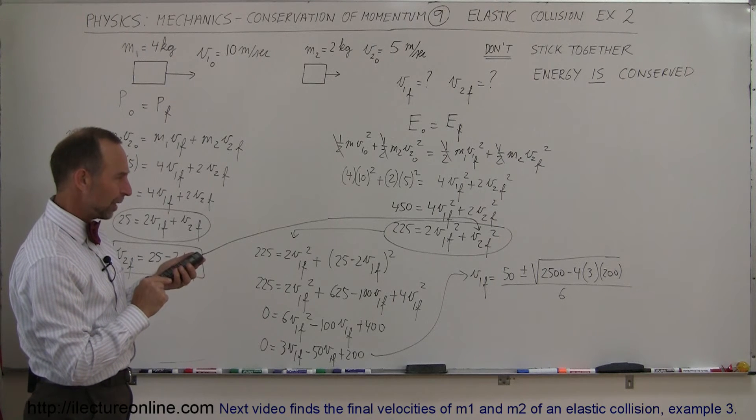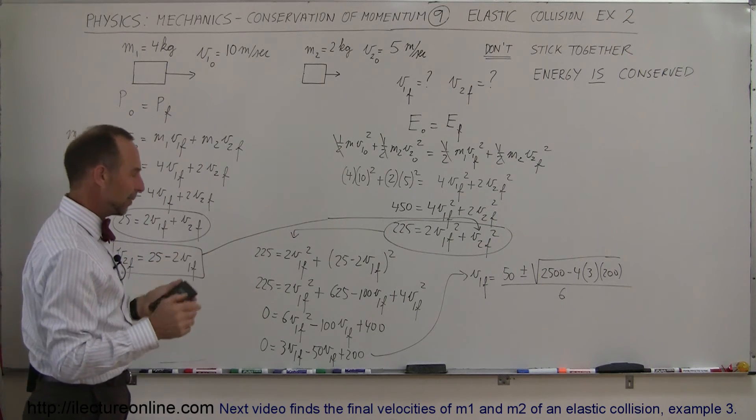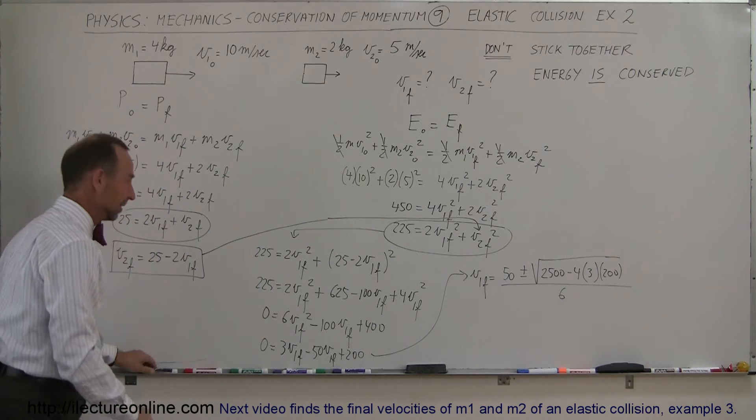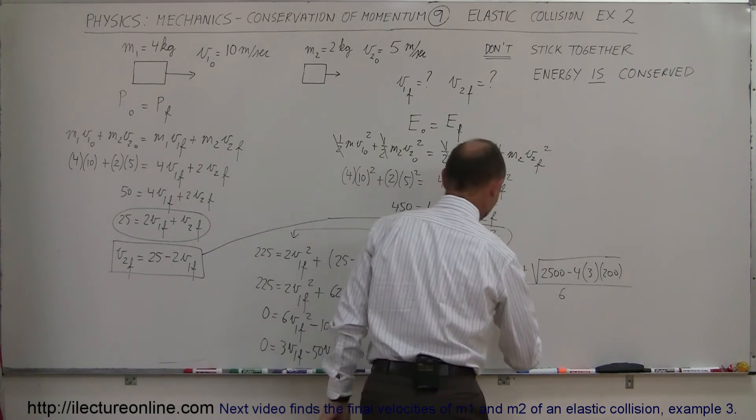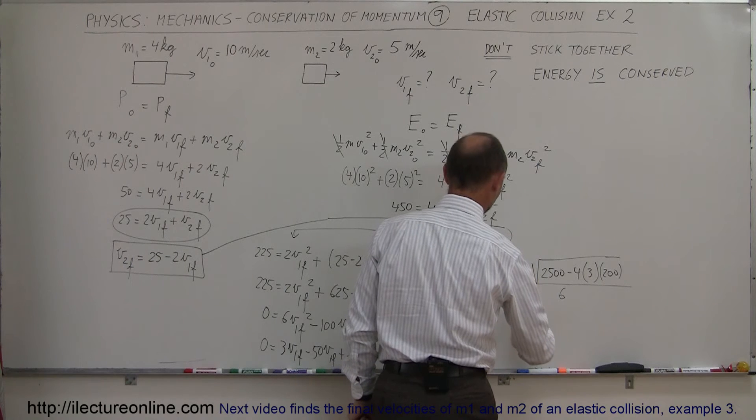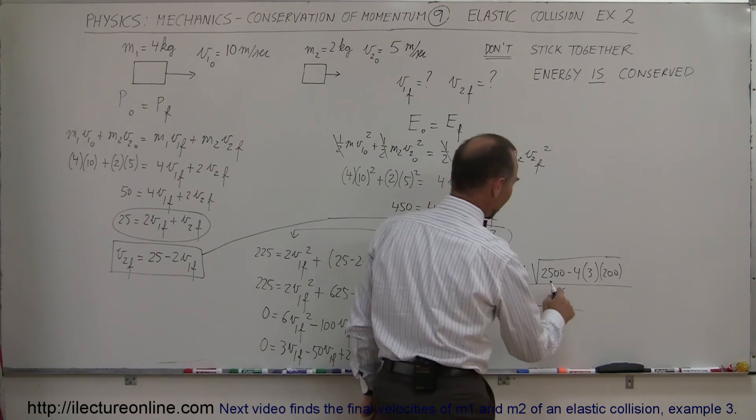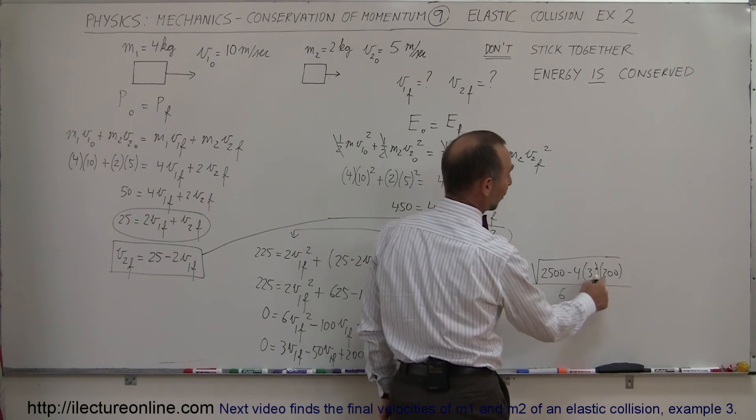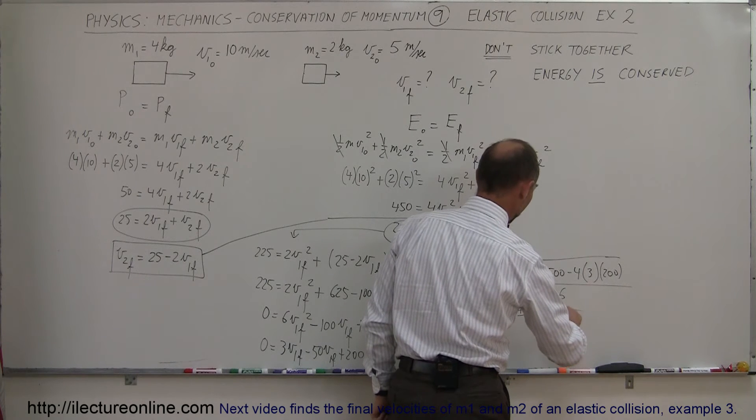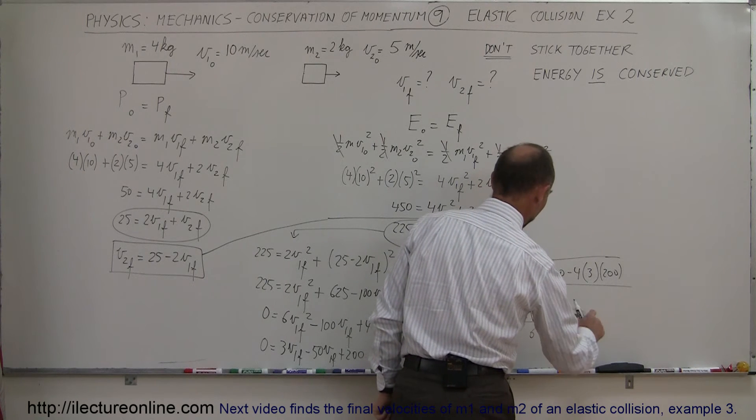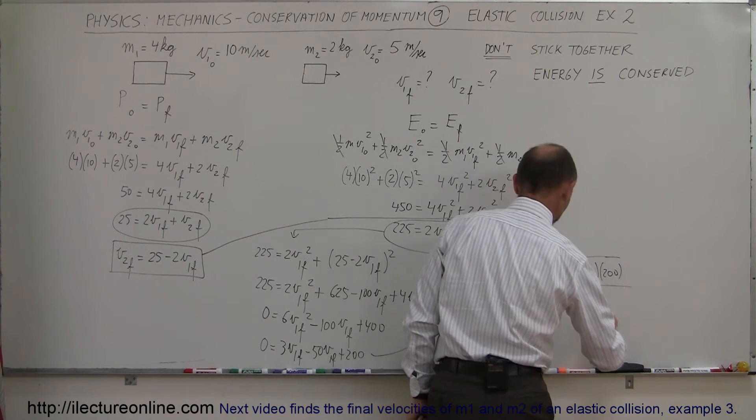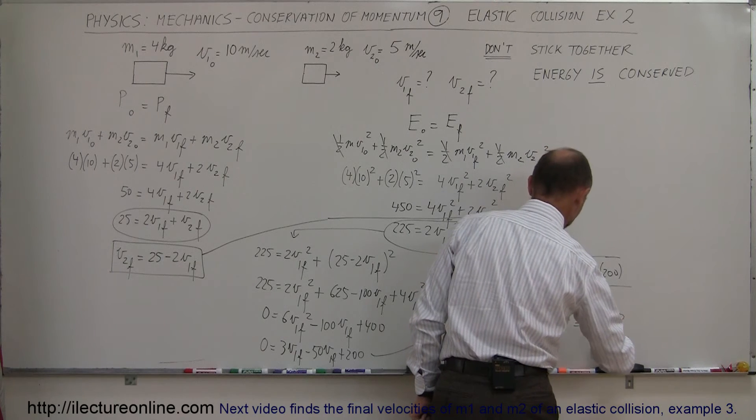So we have, that's 12 times 2400. I didn't even need a calculator for that. Let's see. This is equal to 50 plus or minus the square root of, that's 2500 minus 2400, which is the square root of 100, divided by 6, which is equal to 50 plus or minus 10 divided by 6.